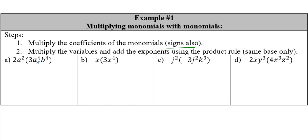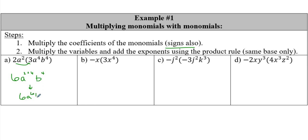We have the monomial 2a squared times another monomial 3a to the fourth b to the fourth. We need to multiply those coefficients: 2 times 3 gives us 6. Then we multiply the variables and add their exponents if they're the same base. So a to the 2 times a to the 4 - we add 2 and 4 - gives us a to the 6. We have no b to multiply with, so we get 6a to the sixth b to the fourth.